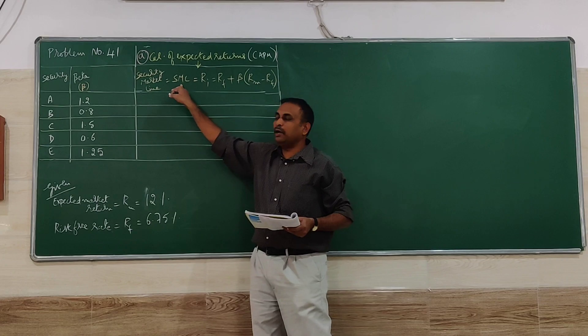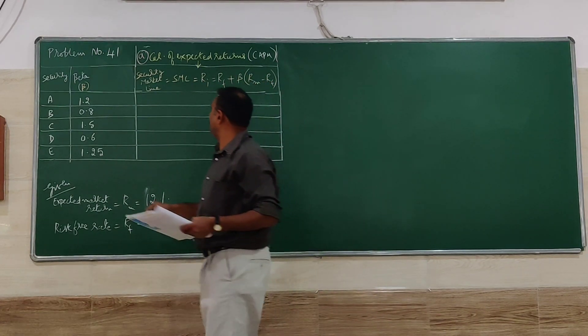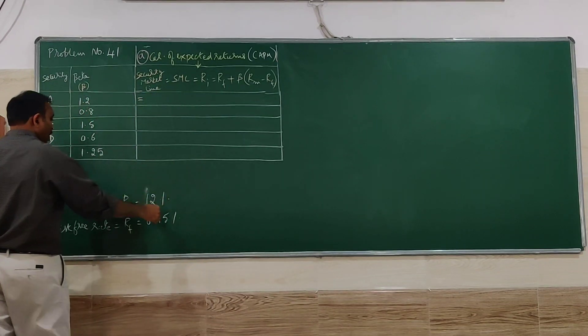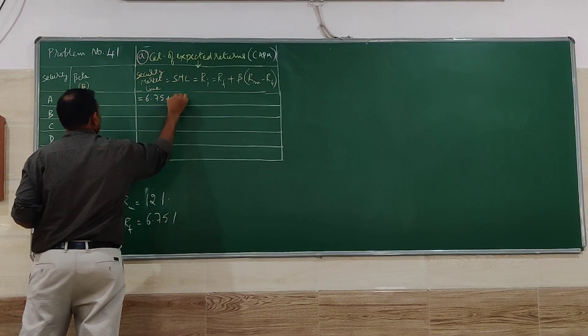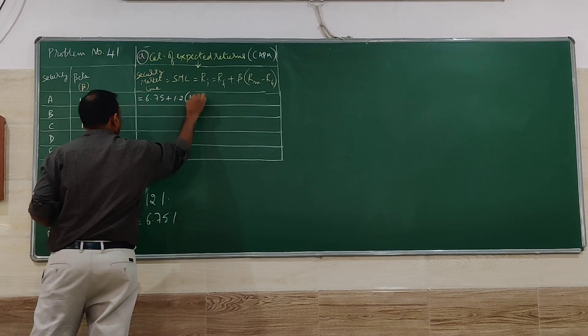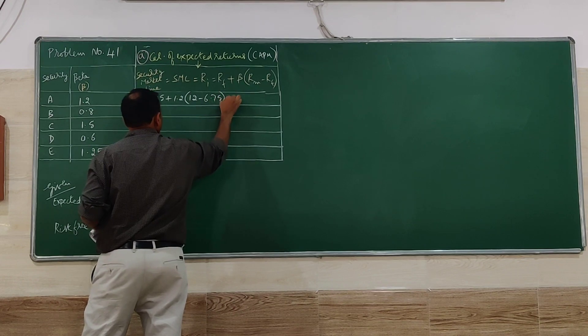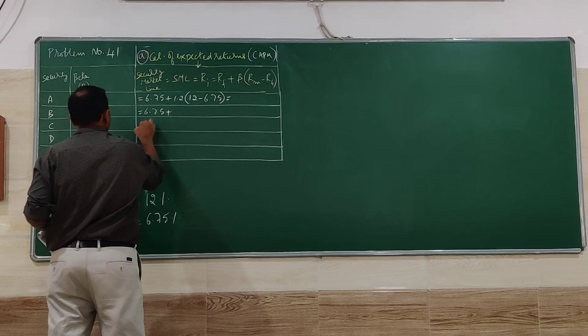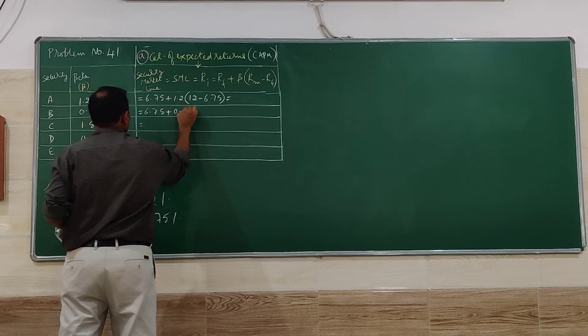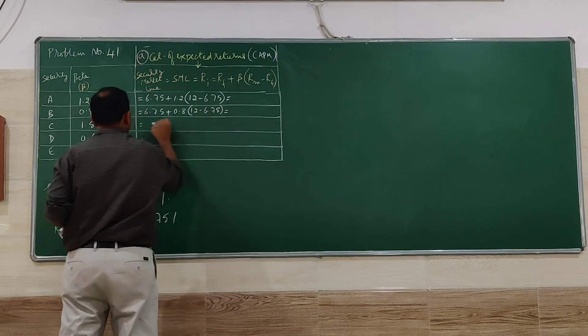Now rf is 6.75% plus beta times rm 12% minus 6.75%. Similarly, we have to go for the substitution for individual securities.